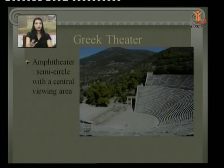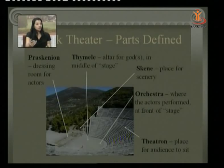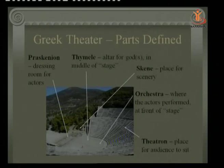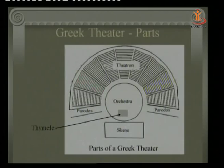The dressing room for the actors would be in the Paraskénion, where that square rectangular space is seen. Then we have the Thymele, the altar of gods, in the middle of the stage — if a god character appears in the drama, that would be on the Thymele section. The Skene is the place for scenery, whatever scenes are to be enacted. The Orchestra is where the actors performed on stage, at the front, and the Theatron is the audience's place to sit and watch.